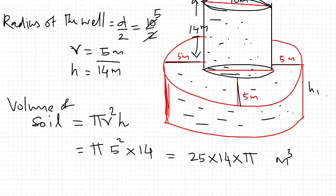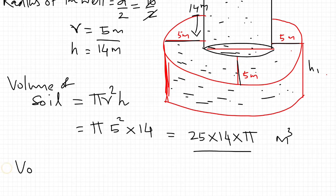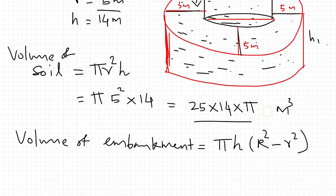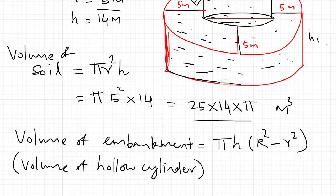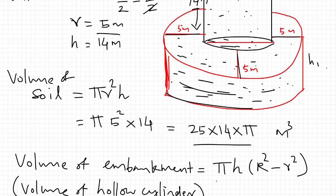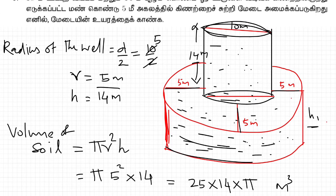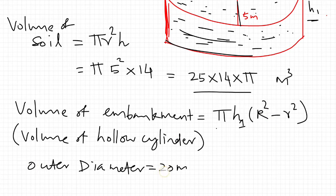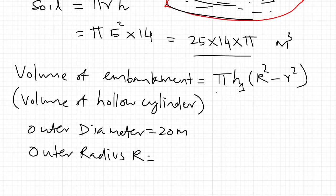The embankment is a hollow cylinder with volume = π × h1 × (R² − r²). The embankment width is 5 meter, so outer radius R = inner radius + width = 5 + 5 = 10 meter. The total outer diameter is 20 meter, giving outer radius R = 20 by 2 = 10 meter.